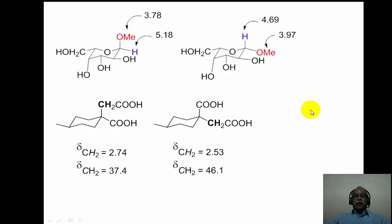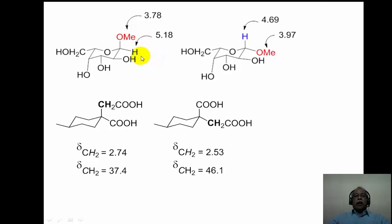Sugar chemistry is rich in stereochemistry, and determining both absolute and relative stereochemistry of sugar molecules is important. Taking methyl glycoside of galactose as an example, the anomeric hydrogen — when the methoxy is in the axial position — is in the equatorial position. When the methoxy is equatorial, the anomeric hydrogen is axial in the chair form of the six-membered pyranose ring.